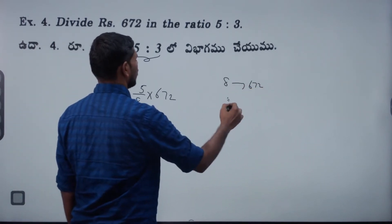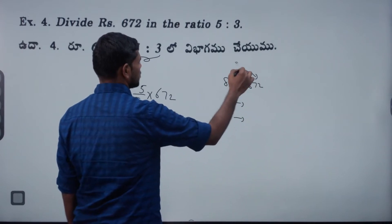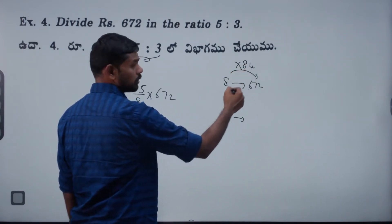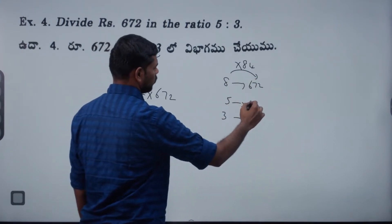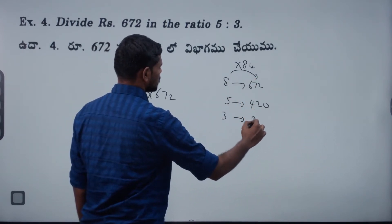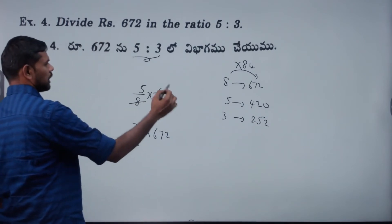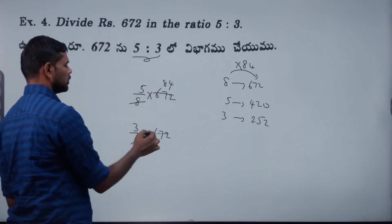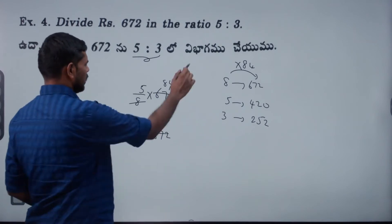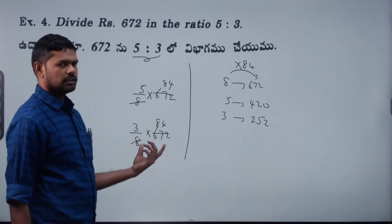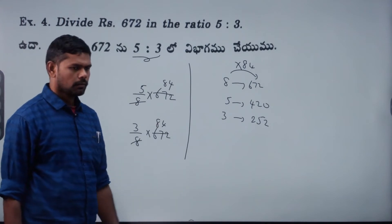672 into 5 by 8 is 420, and 672 into 3 by 8 is 252. Unit trim method is normal. No problem for the utilization. Distribution-based type of question. The total length is 80, split into 5 by 8 and 3 by 8. Clear?